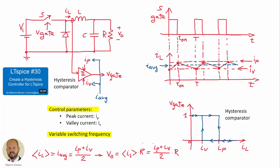Here we have the waveforms: the current through the inductor goes between the valley value and the peak value. When the current goes up and exceeds the peak value, the switch is turned off, so the current through the inductor is decreasing. When this current is a little bit lower than the valley value, the switch is turned on again and the current increases. With this, we can control the average value of the current through the inductor, which is equal to the peak value plus the valley value divided by two. This average value also determines the DC output voltage of the converter, which equals the average inductor current times the load resistance.